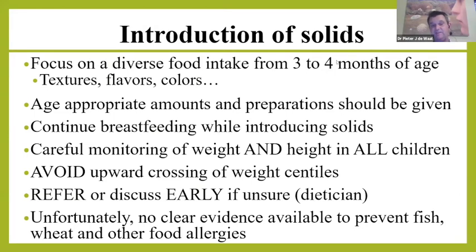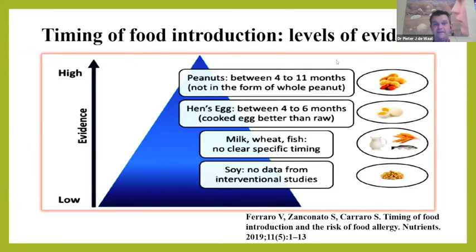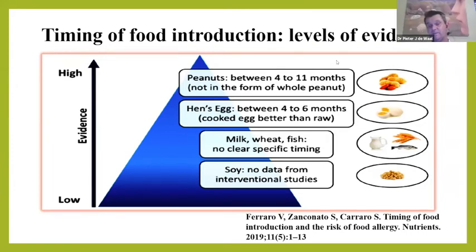There is no clear evidence available to prevent fish, wheat, and other food allergies, or non-IgE-mediated food allergies. To summarise timing: peanut should be introduced from 4 to 11 months, not as whole peanut; cooked egg rather than raw should be introduced. There is no specific timing recommendation for milk, wheat, or fish. South African food-based dietary guidelines now advise pasteurised full-cream cow's milk with maas and yoghurt from about one year — the lactic acid bacteria and their byproducts may be beneficial in preventing cow's milk allergy.